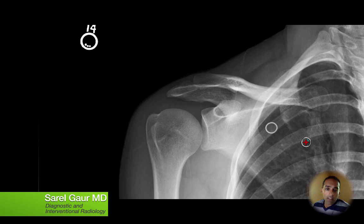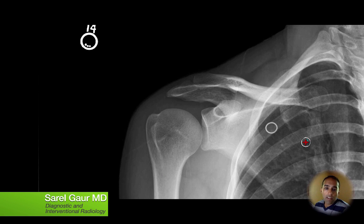Hey, it's Rogue RMD and today I'm going to show you how I look at a shoulder x-ray. I'm basically going to focus on how to exclude an anterior dislocation of the shoulder, and let's start right now.